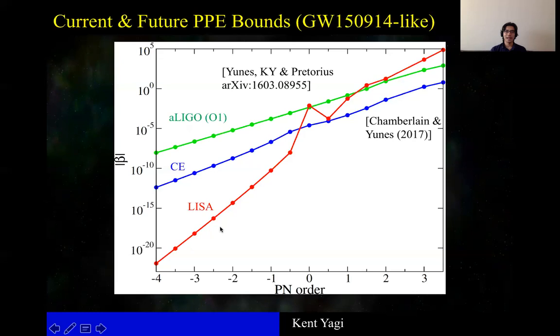Now, if we have both Cosmic Explorer and LISA in operation, and if we can realize multiband observation, then the bound on beta improves even further to this magenta curve. This is a log scale.